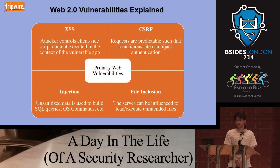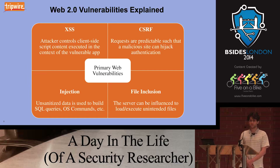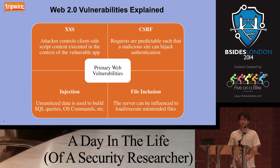With web vulnerabilities, I'm going to talk about four of the primary categories which are very common to find and sometimes very easy to find. First on the list, you've got cross-site scripting. This is whenever you have the ability to inject client-side code into a web page so that it's executing in the context of that domain. It gives you access to cookies and things like that.